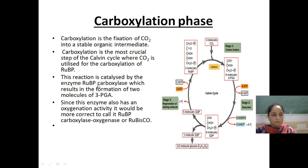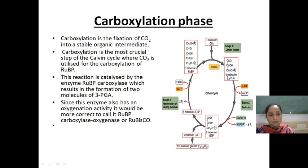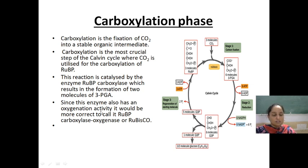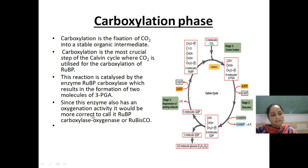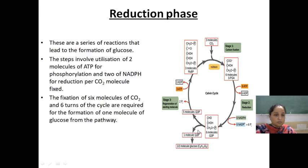This reaction is catalyzed by the enzyme RuBP carboxylase, which results in the formation of two molecules of 3-phosphoglyceric acid per RUBP. Since this enzyme also has oxygenation activity, it is more correctly called RuBisCO — ribulose bisphosphate carboxylase oxygenase. This enzyme name is very important for your boards.